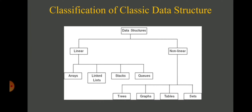Classification of classic data structures. In computer science, there are several data structures known depending on the areas of application. But out of them, a few data structures are frequently used in almost all applications. These frequently used data structures are called fundamental data structures or classic data structures. All the classic data structures are classified into two main classes: linear and non-linear data structures.